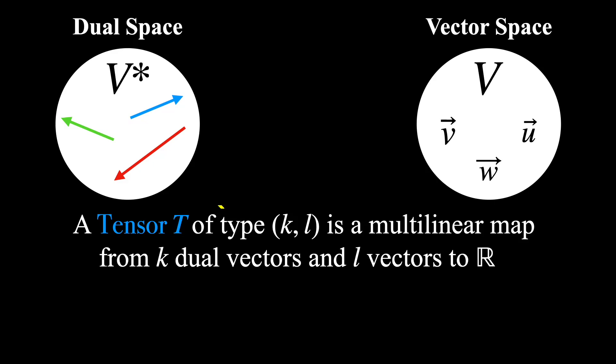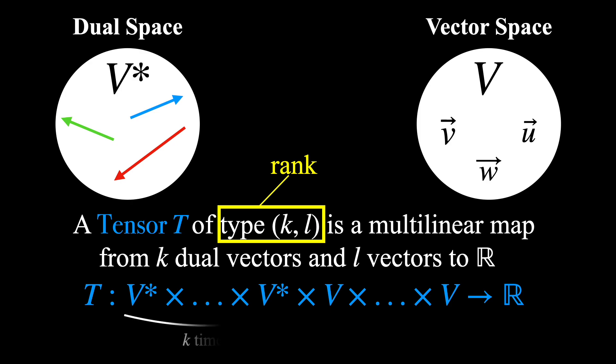The first thing I'll address is this notion of type. Another word you might encounter for it is rank. It simply captures how many elements you are taking as inputs from each of the above spaces, where the first K elements are from the dual space and the next L elements are from the vector space. And this X symbol between them all is the Cartesian product.